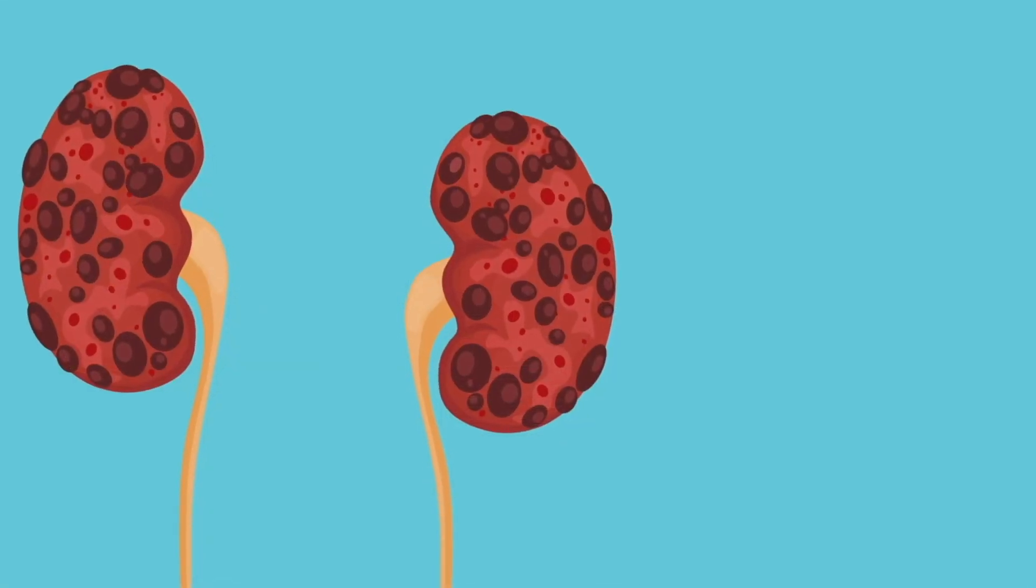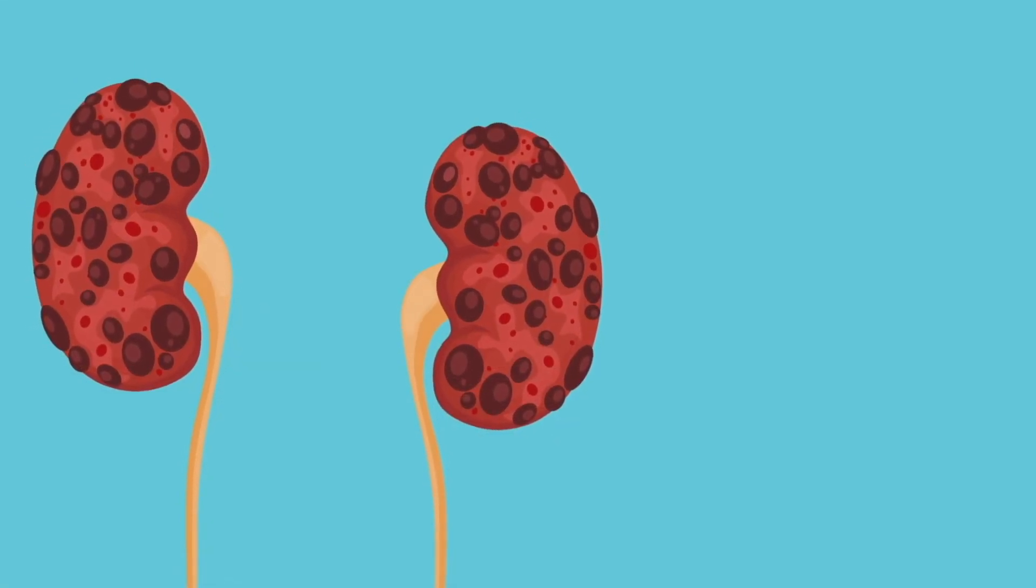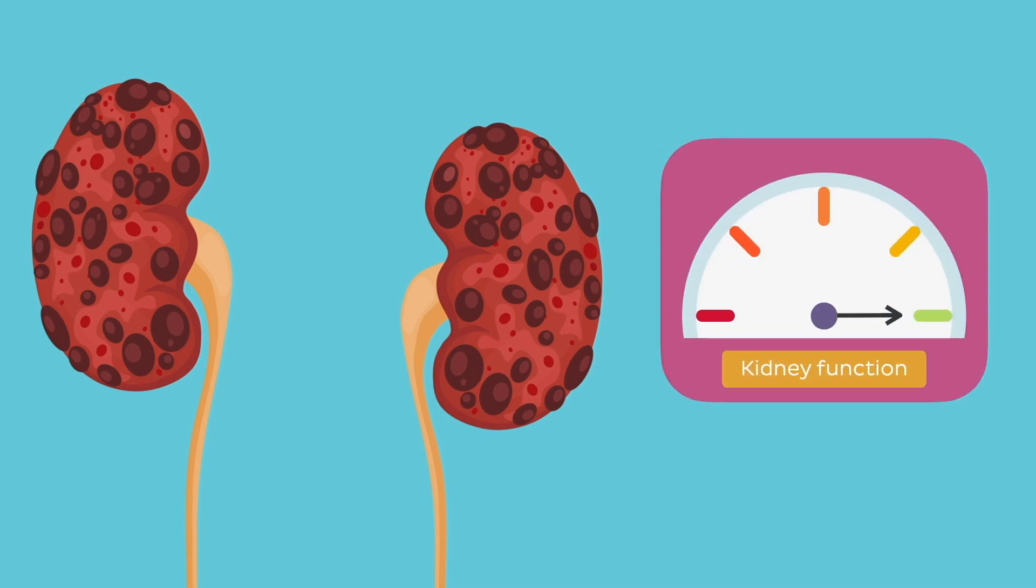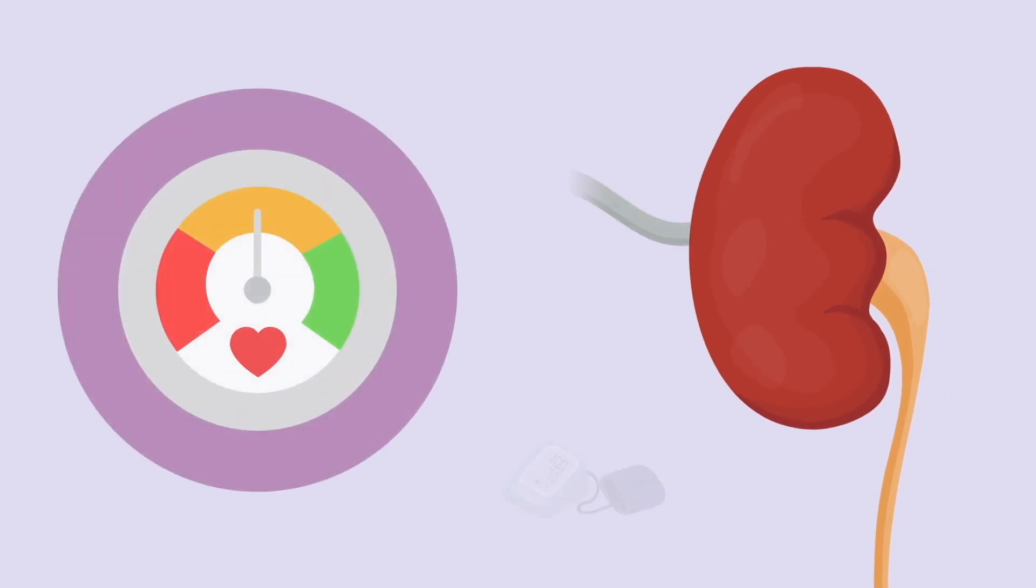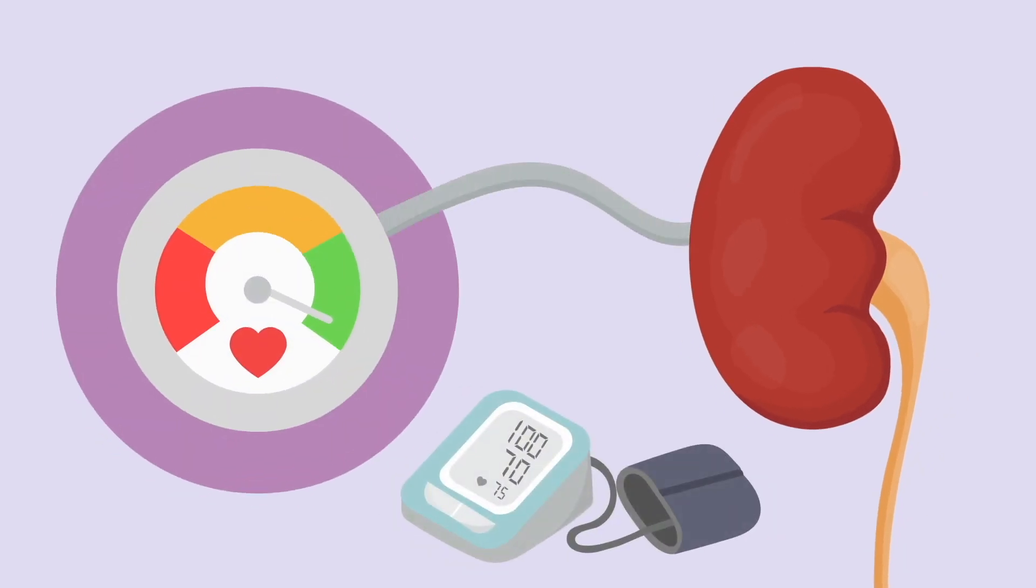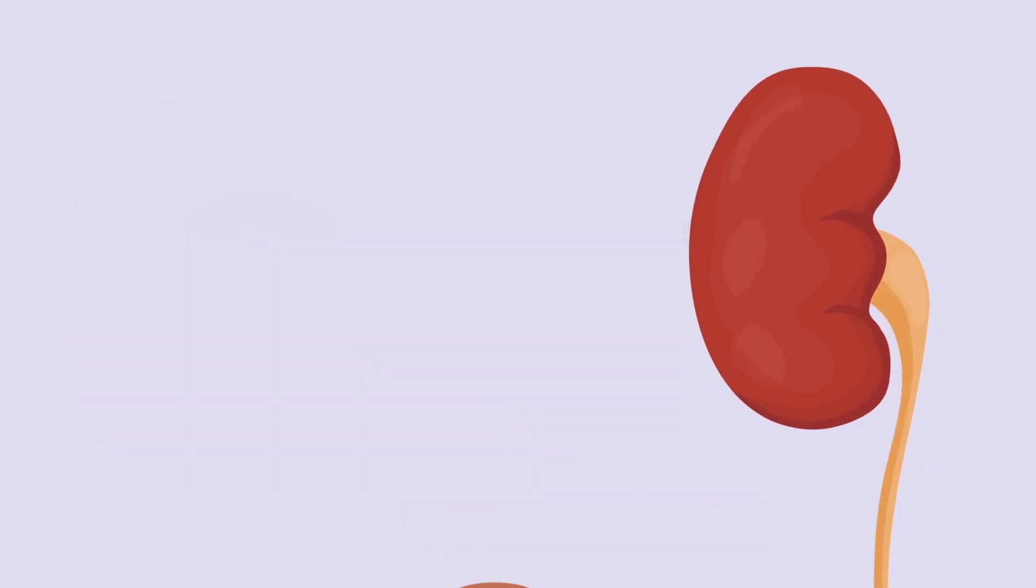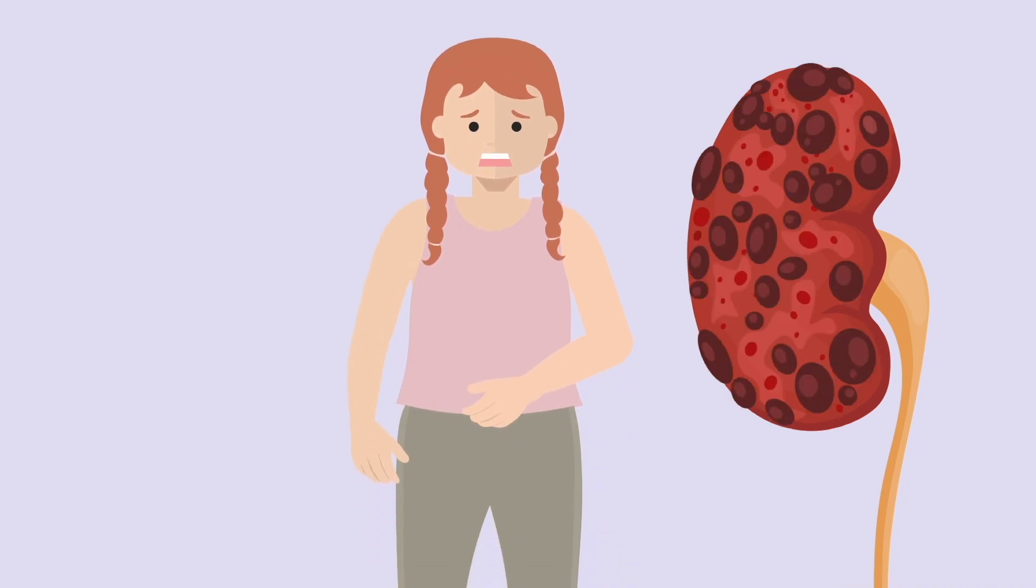In fact, polycystic kidney disease is by far the most common inherited cause of end-stage renal failure, accounting for up to 10% of all cases of such condition. And since the kidneys have a key role in maintaining our blood pressure at normal levels, people affected by polycystic kidney disease also usually suffer from hypertension and all of its possible consequences.